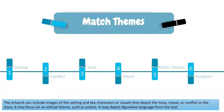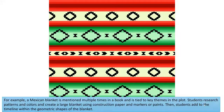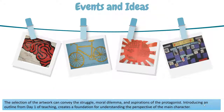The artwork may depict figurative language from the text. For example, a Mexican blanket is mentioned multiple times in a book and is tied to key themes in the plot. Students research patterns and colors and create a large blanket using construction paper and markers or paints. Then students add to the timeline within the geometric shapes of the blanket. The selection of artwork can convey the struggle, moral dilemma, and aspirations of the protagonist.